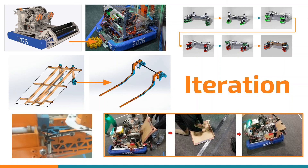Finally, you can see that iteration can happen anywhere and anyhow. At our field, we had a broken intake and to decide how to redesign it, we used a pizza box, cut it into the shape we thought would work best, and iterated on that so that when we went back to the CAD, we could know what worked best. Thank you for watching and we'll see you next time.